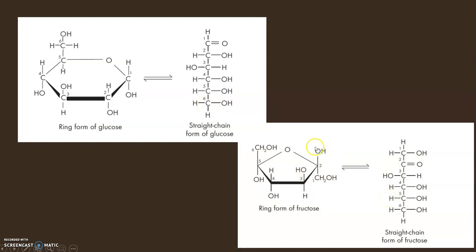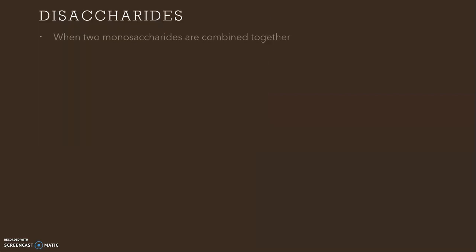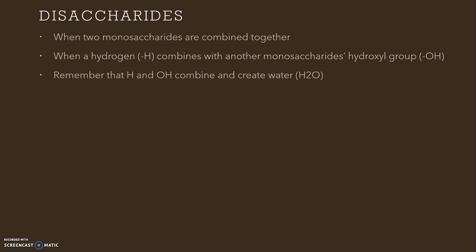Now let's talk about disaccharides. Disaccharides are basically when two monosaccharides are combined together. So when you combine two glucose monosaccharides, it's going to create a disaccharide which is known as maltose. Remember that when a hydrogen combines with another monosaccharide's hydroxyl group (OH), it's going to create a disaccharide and that's going to release water.